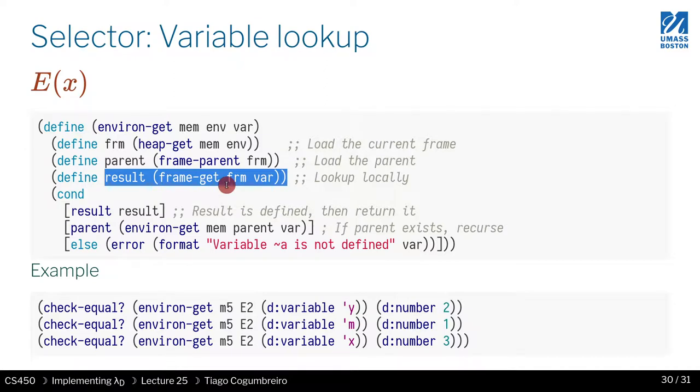E represents the environment, var represents x, and mem is always the primary heap. First, we get the frame associated with e, then we get the parent frame, and we get the result of performing a get.